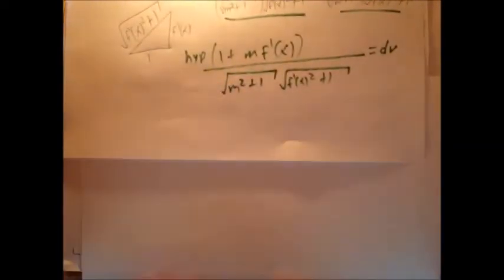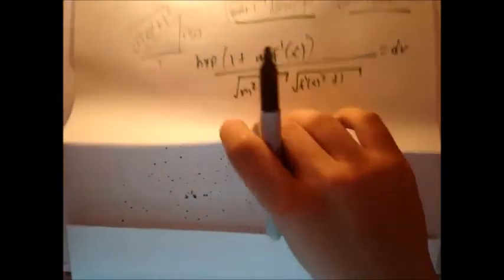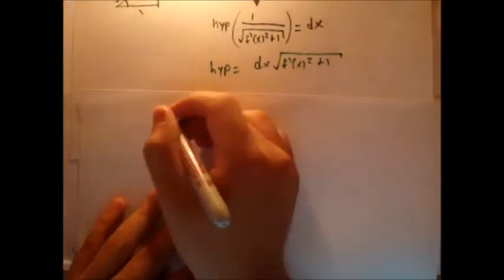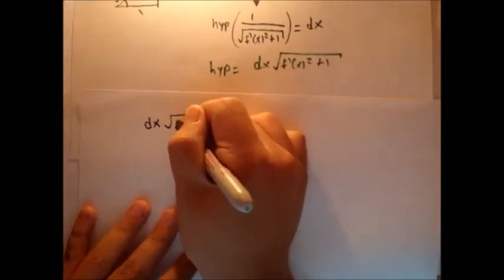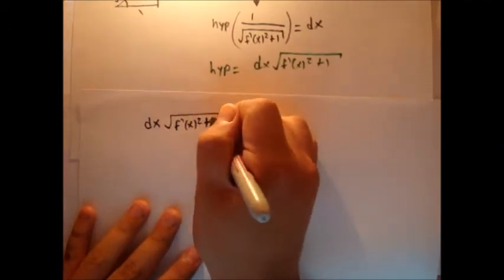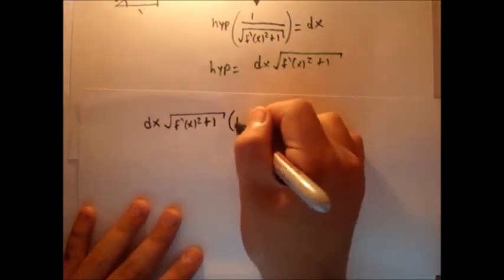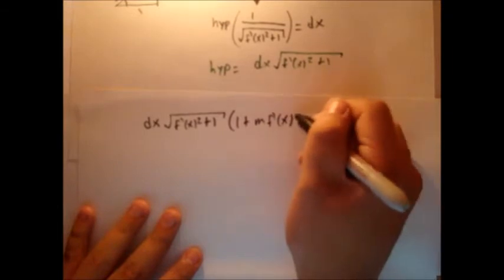So we know the following hypotenuse 1 plus f prime of x. But now we know what the hypotenuse is. So let's actually write that. Because we're replacing a substitution. f prime of x squared plus 1. And then we can go times our original function that we had. We did is a substitution.